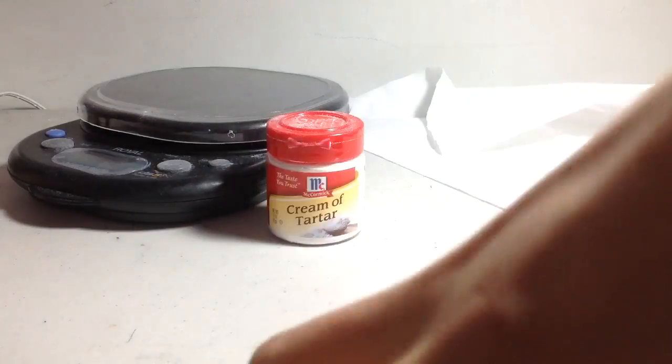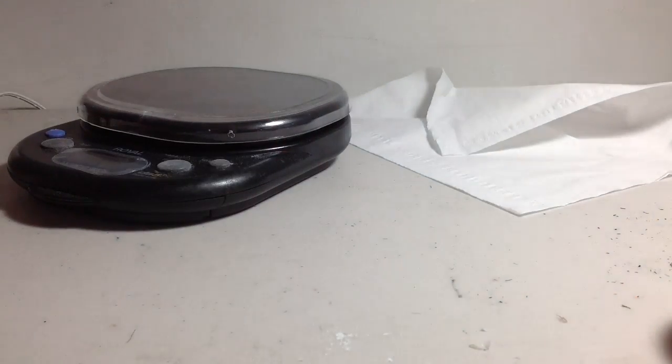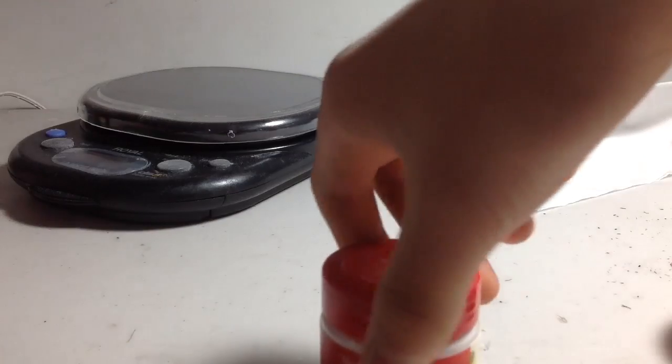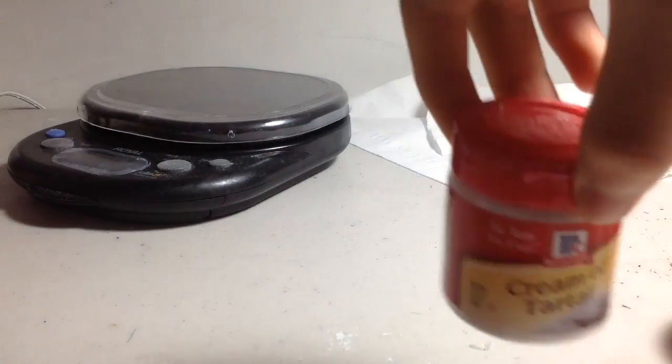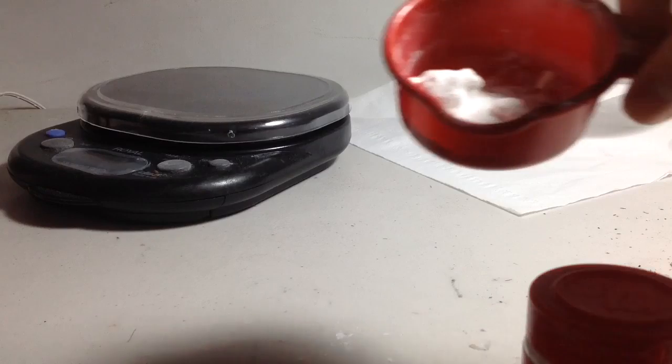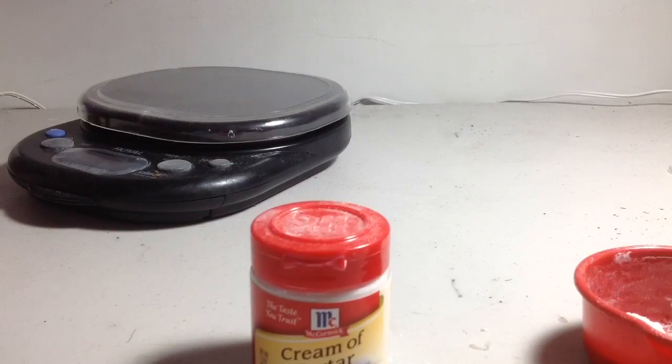First you've got to create the Rochelle salt from these ingredients. We're going to mix cream of tartar, which is potassium bitartrate, with sodium carbonate, which is a base.